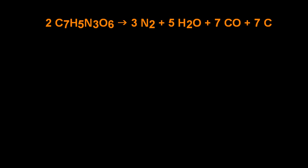OK, let's look at the chemistry of TNT. That makes three gases. Nitrogen, water vapor and carbon dioxide, carbon monoxide, excuse me. And the carbon, that's the solid, that's the black smoke that you see from TNT exploding.